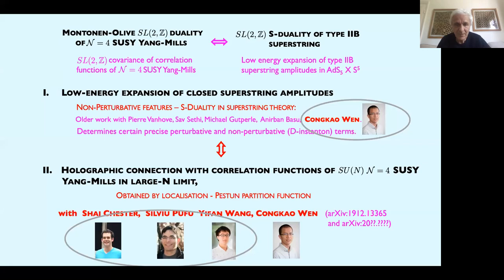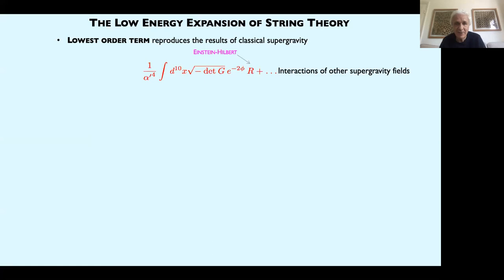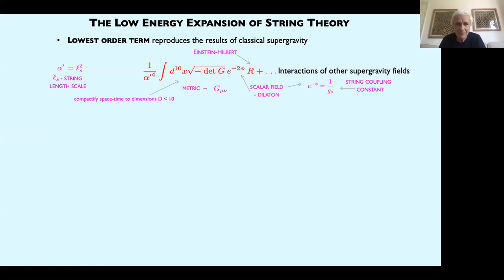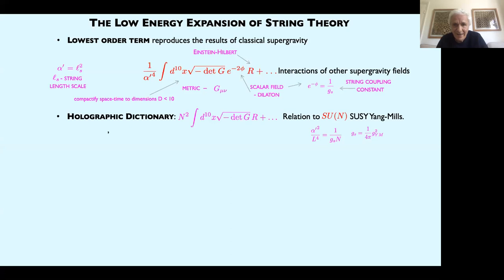Let me begin with a quick review of the connections between the low energy expansion and holography. At lowest order in the low energy expansion, one has the stringy version of the Einstein-Hilbert term, which involves the dilaton field — when it's constant, it is one over the coupling constant; e to the minus phi is one over the string coupling. Alpha prime, as usual, will be the square of the string length. This translates, using the holographic dictionary, into a term proportional to N squared, with no dependence on the coupling constant — this is the supergravity part of the action, involving the curvature scalar R.